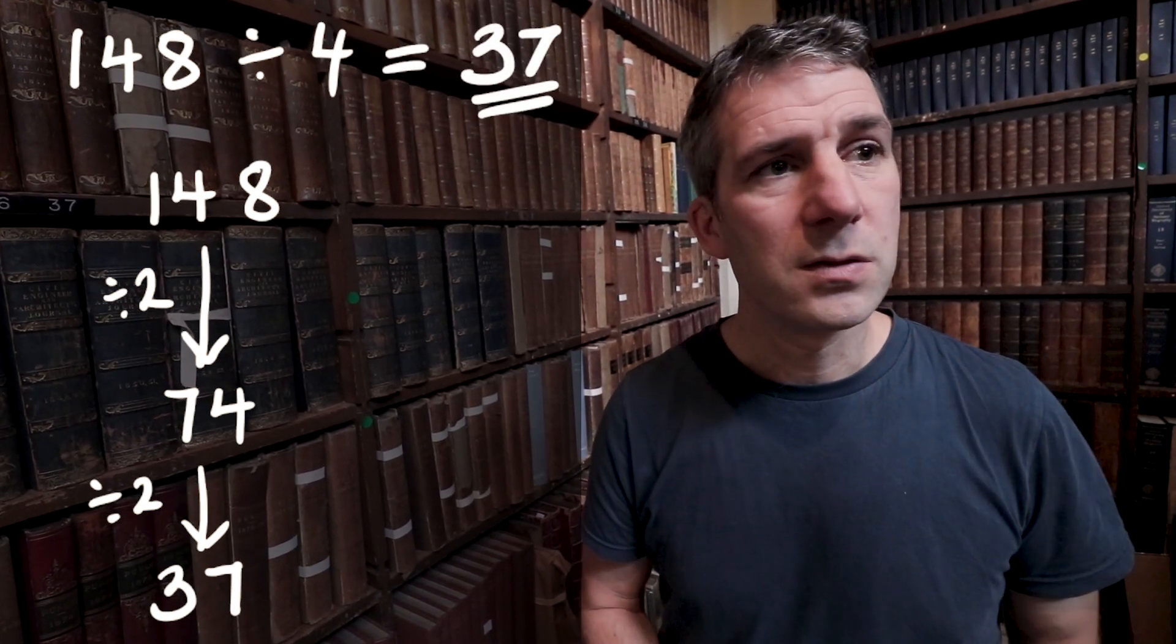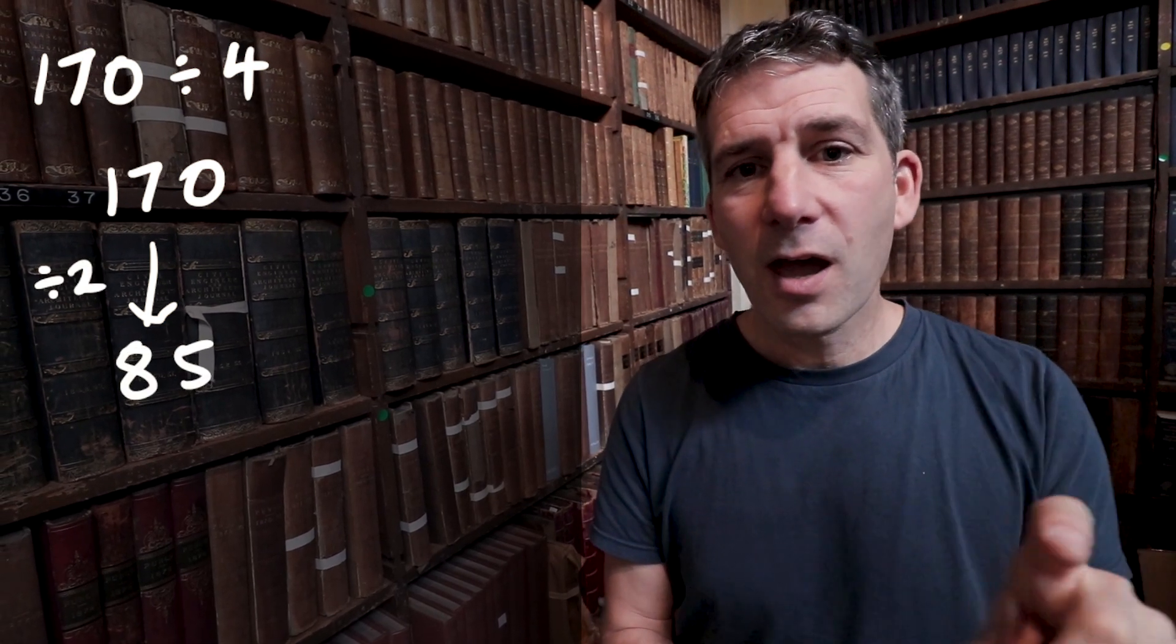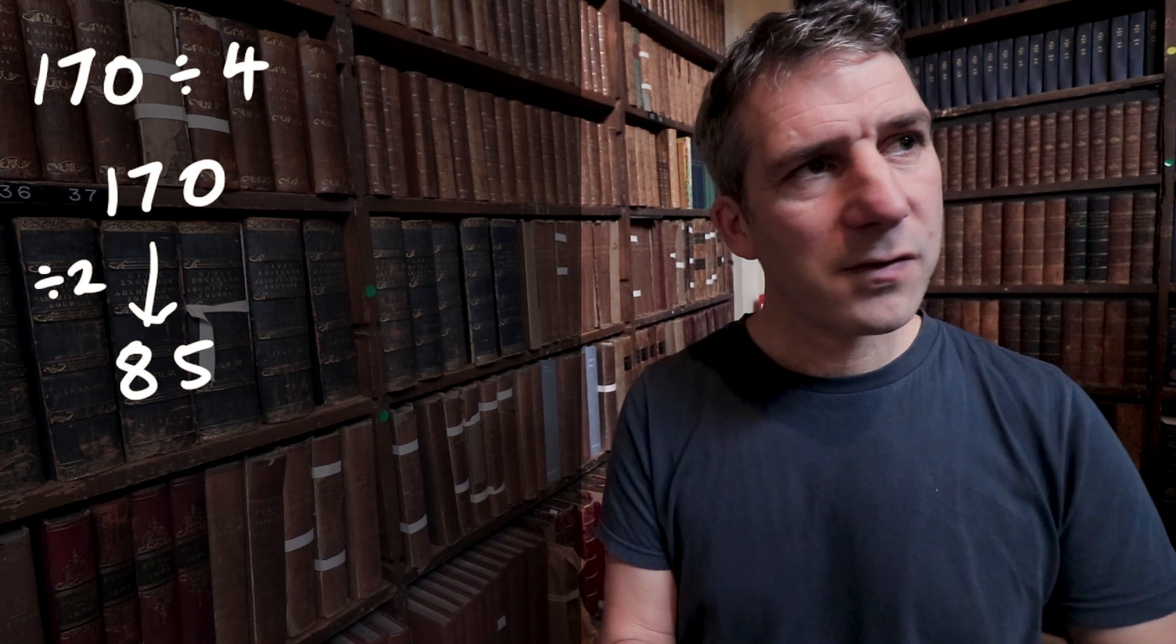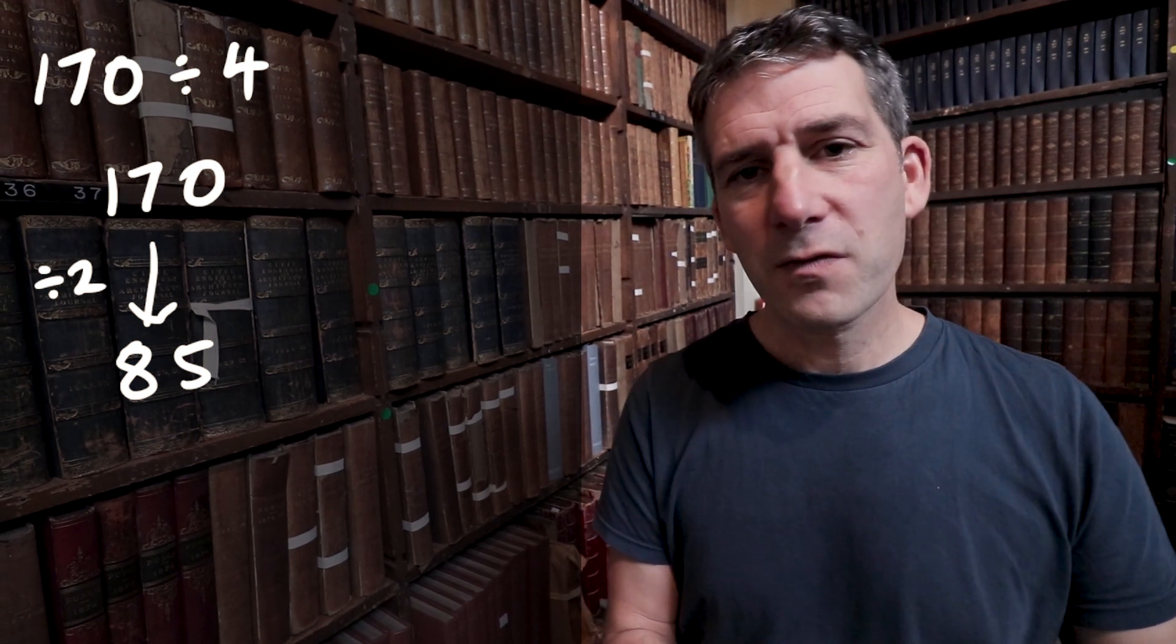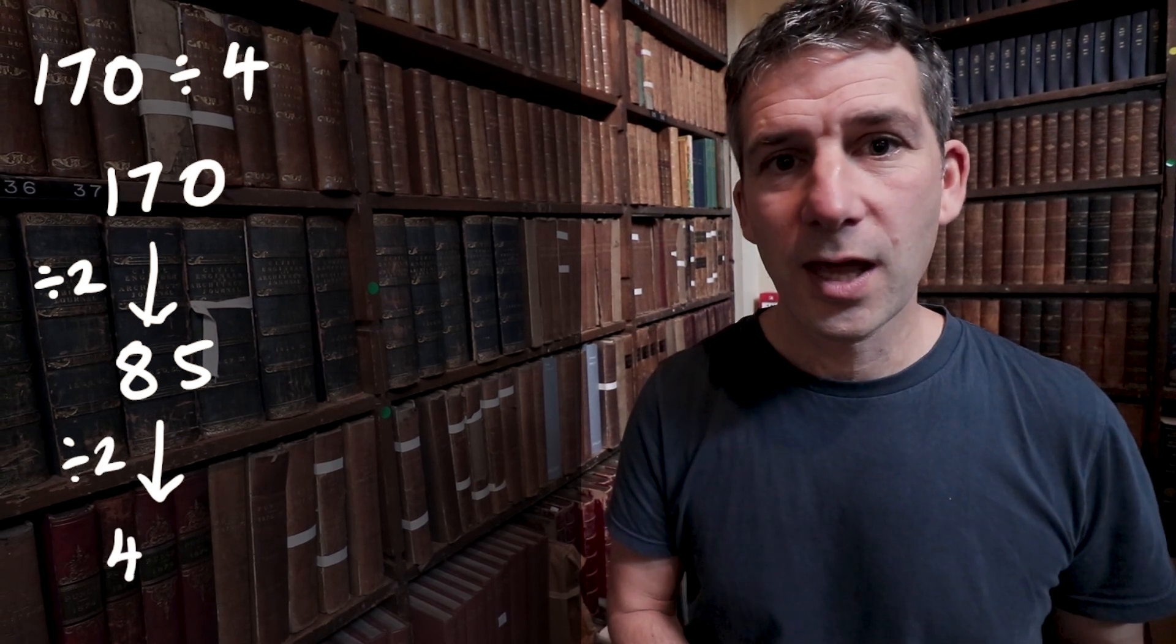Let's say I wanted to do something like 170 divided by 4. Well, I'm going to halve it. Half of 170. Well, half of 100 is 50. Half of 70 is 35. So that's 85 if I halve it. And then if I halve it again, half of 85. Well, half of 80 is 40. Half of 5 is 2.5. So we've got 42.5.